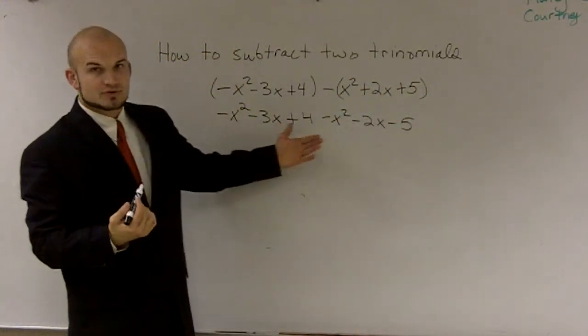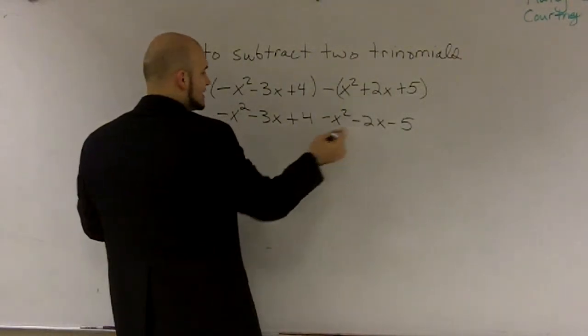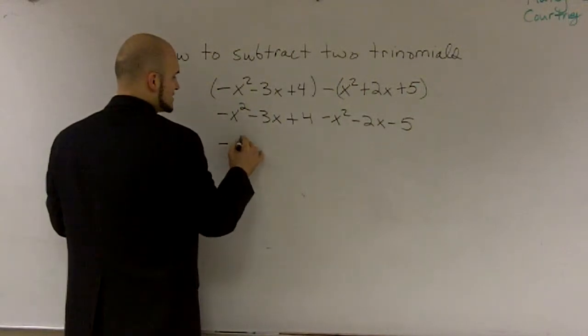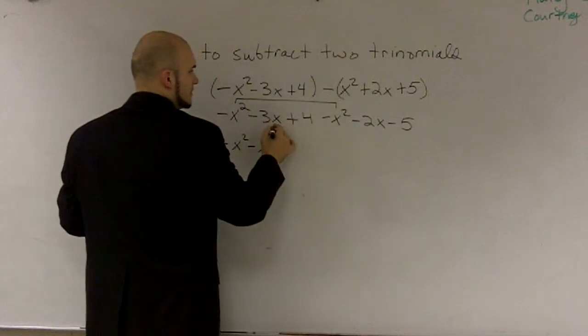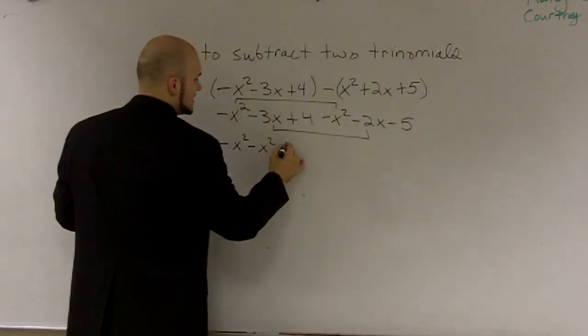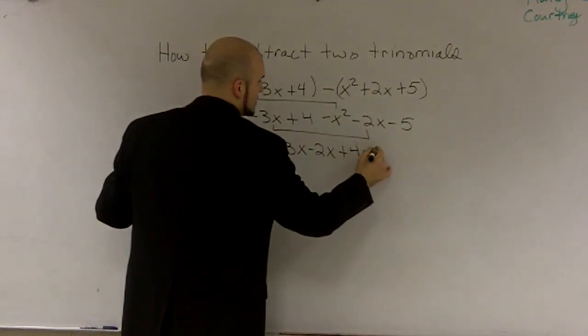Now you can only subtract and add your like terms. So what I'm going to do is I'm just going to rewrite it with my like terms next to each other. So I have an x squared minus an x squared, I have a negative 3x minus a 2x, and I have a 4 minus a 5.